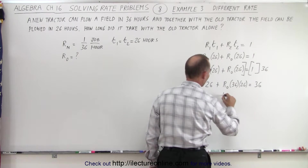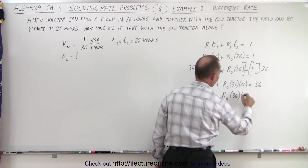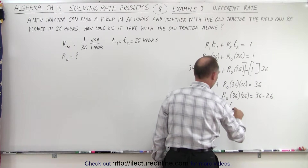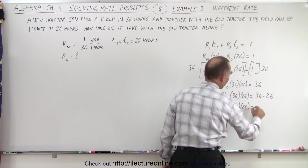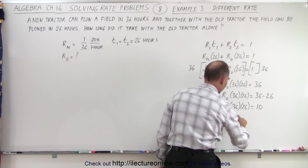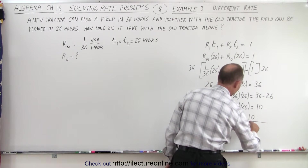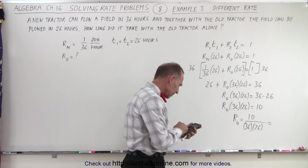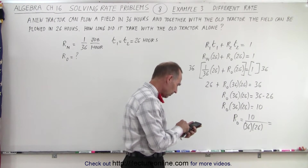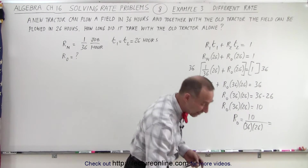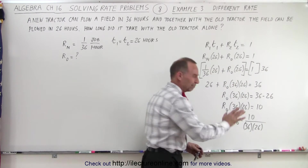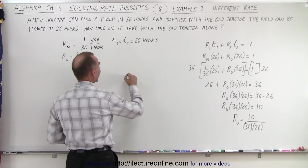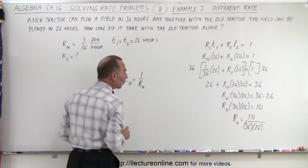Subtract 26 from both sides: the rate of the old tractor times 36 times 26 equals 36 minus 26, which is 10. So the rate of the old tractor equals 10 divided by (36 times 26). The time of the old tractor is equal to the inverse of the rate of the old tractor — that's easier to deal with.